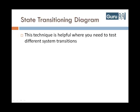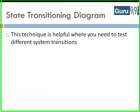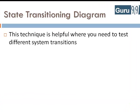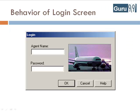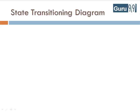State Transitioning Diagram is helpful where you need to test different system transitions. To understand this with an example, let's consider the behavior of the login screen of a flight reservation application.